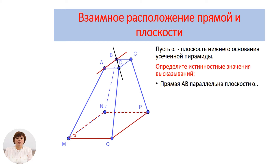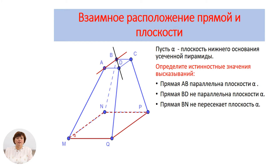Первое: прямая AB параллельна плоскости α. Прямая BD не параллельна плоскости α. Прямая BH не пересекает плоскость α.